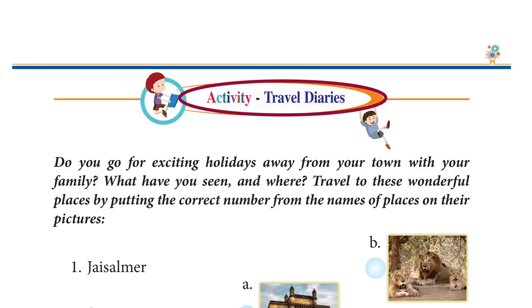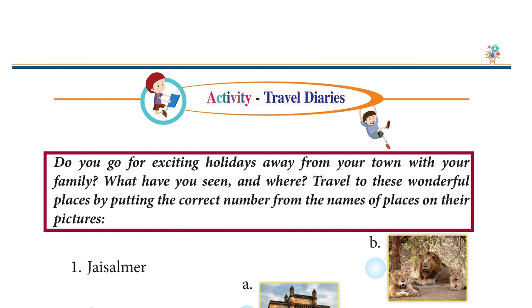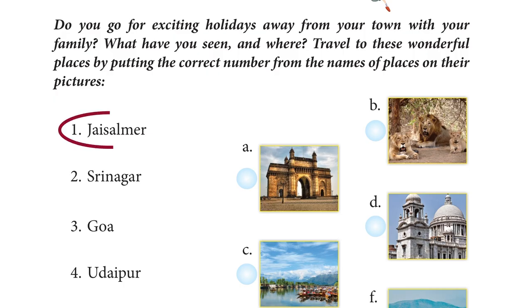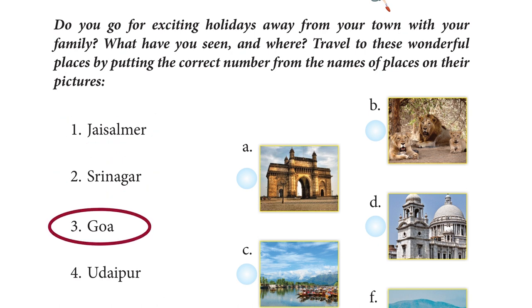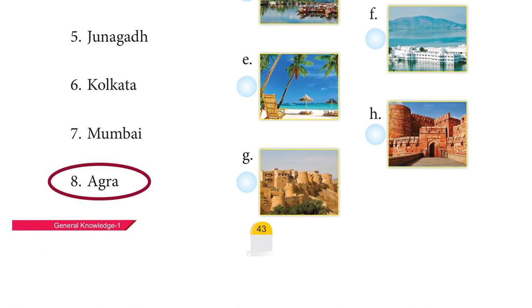Activity — Travel Diaries. Do you go for exciting holidays with your family? Travel to these wonderful places by putting the correct number on the pictures: Jaisalmer, Srinagar, Goa, Udaipur, Junagadh, Kolkata, Mumbai, Agra. Do it yourself!